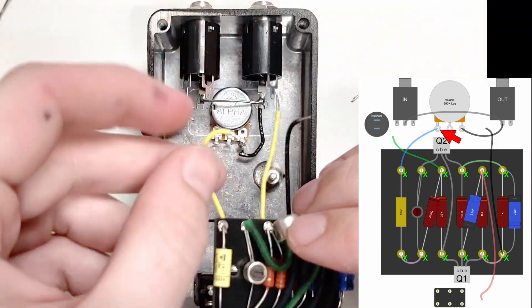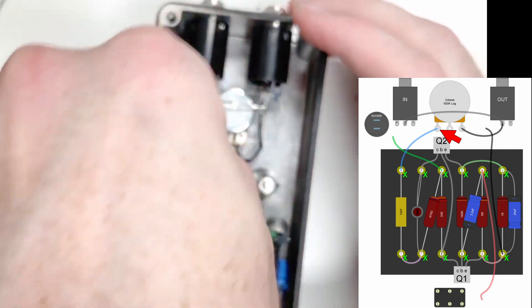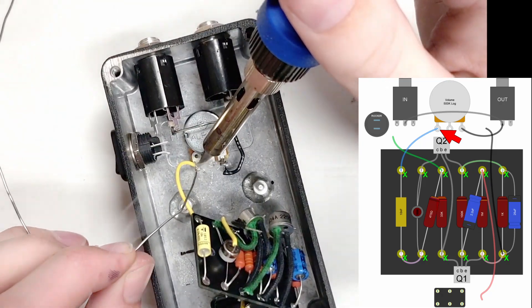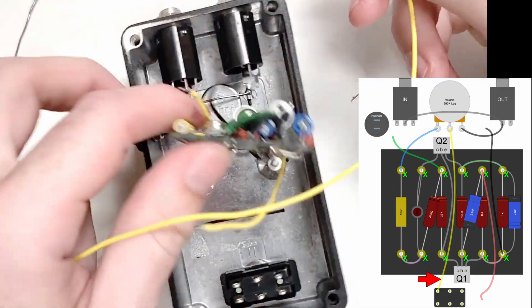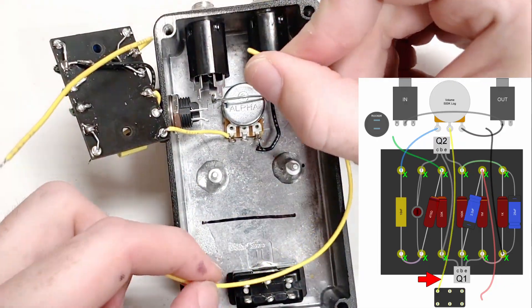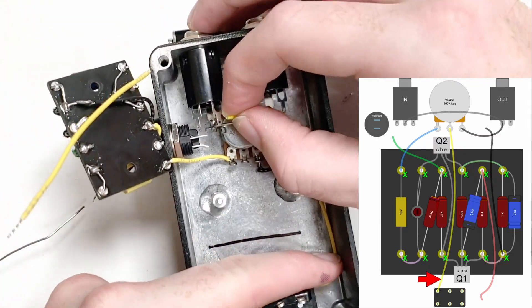Lug three of the potentiometer is connected to the board. Using the installed wire, we will solder this connection with the board floating. Last, we'll measure out a length of wire for the lug two connection. This is the output of the effect, which connects to a lug on the foot switch.